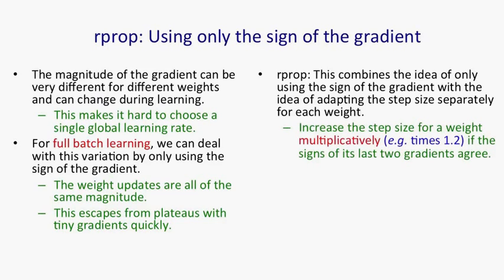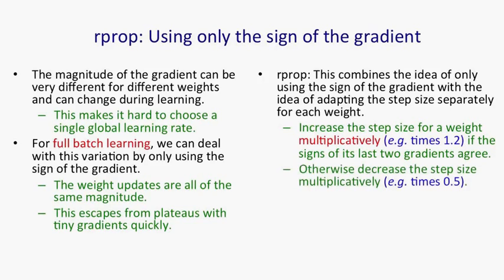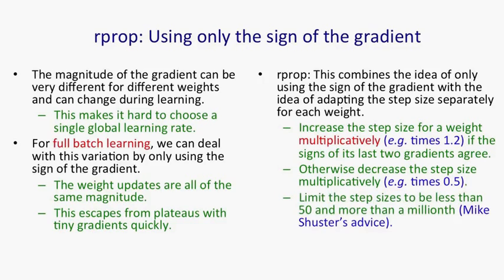We increase the step size for a weight multiplicatively — for example, by a factor of 1.2 — if the signs of the last two gradients agree. This is like Robbie Jacobs' adaptive weights method, except that we do a multiplicative increase here. If the signs of the last two gradients disagree, we decrease the step size multiplicatively, and we make that decrease more powerful than the increase so we can die down faster than we grow. We need to limit the step sizes; Mike Schuster's advice was to limit them between 50 and a millionth, though it depends a lot on the problem. If you have tiny inputs, you might need very big weights, but if not, an upper limit much less than 50 would probably be a good idea.